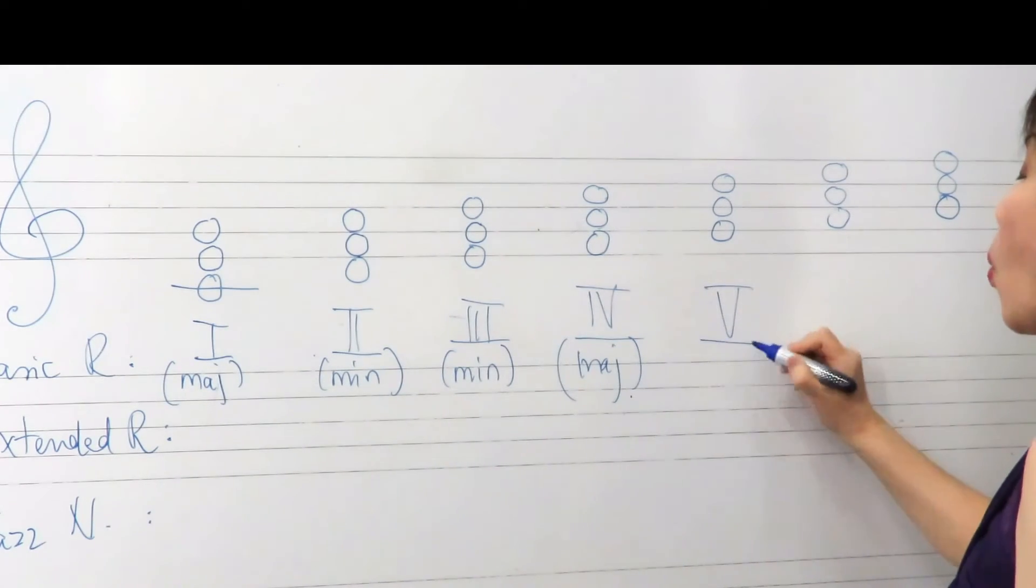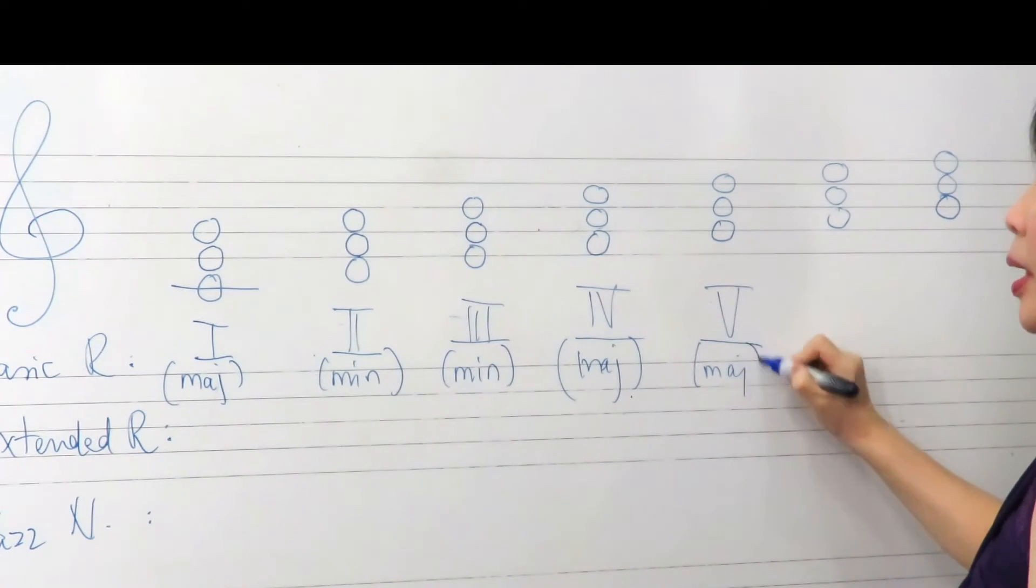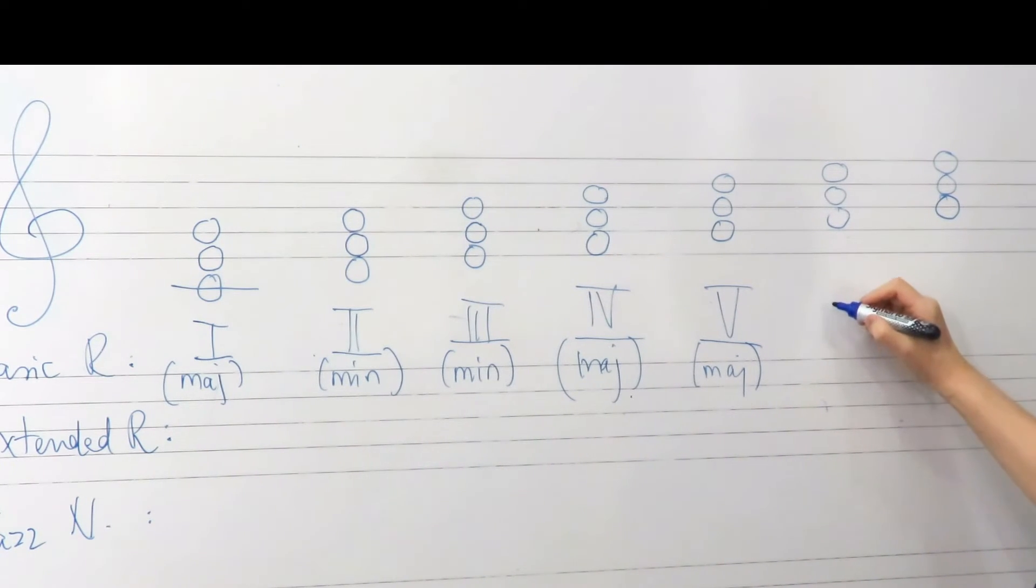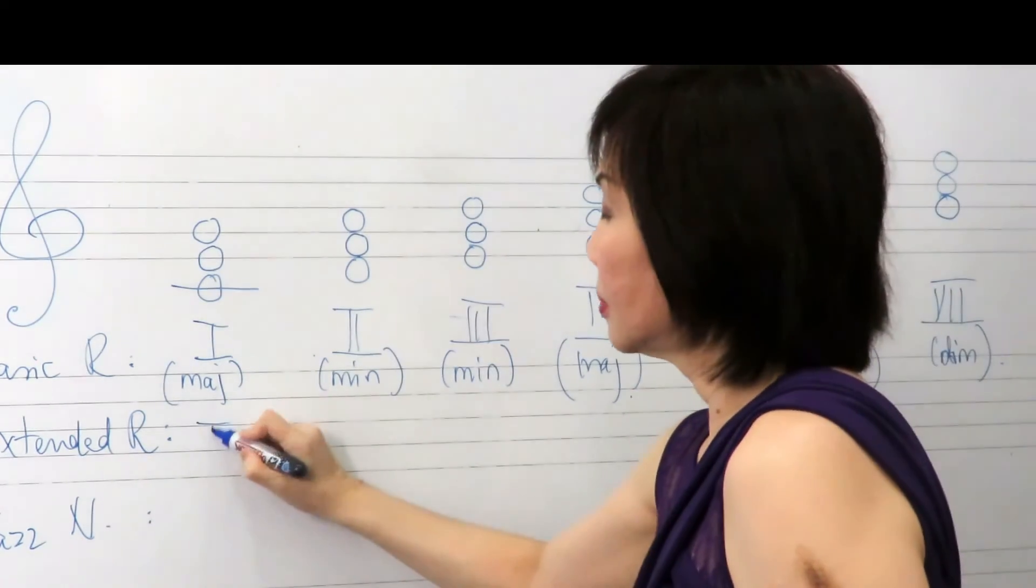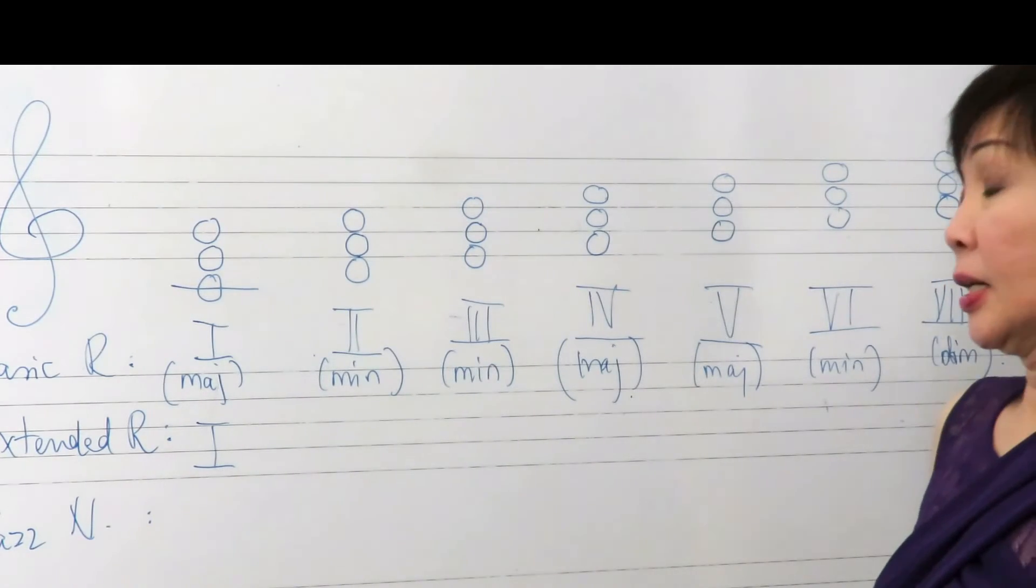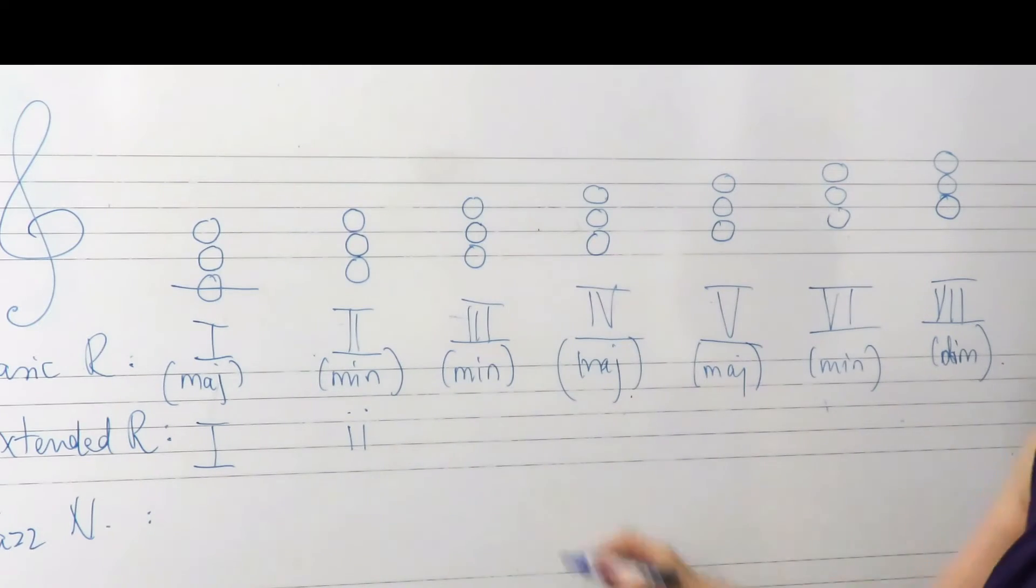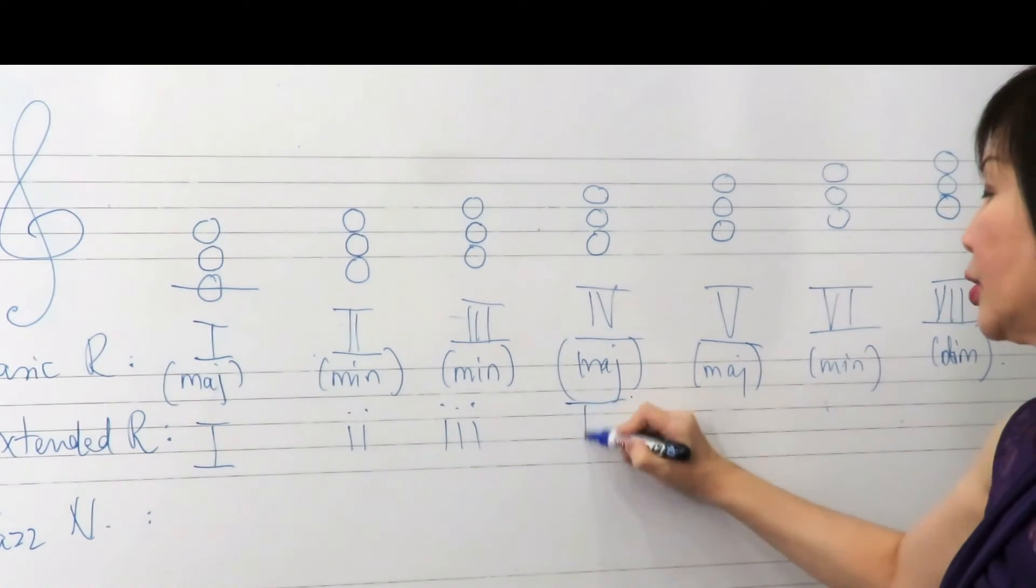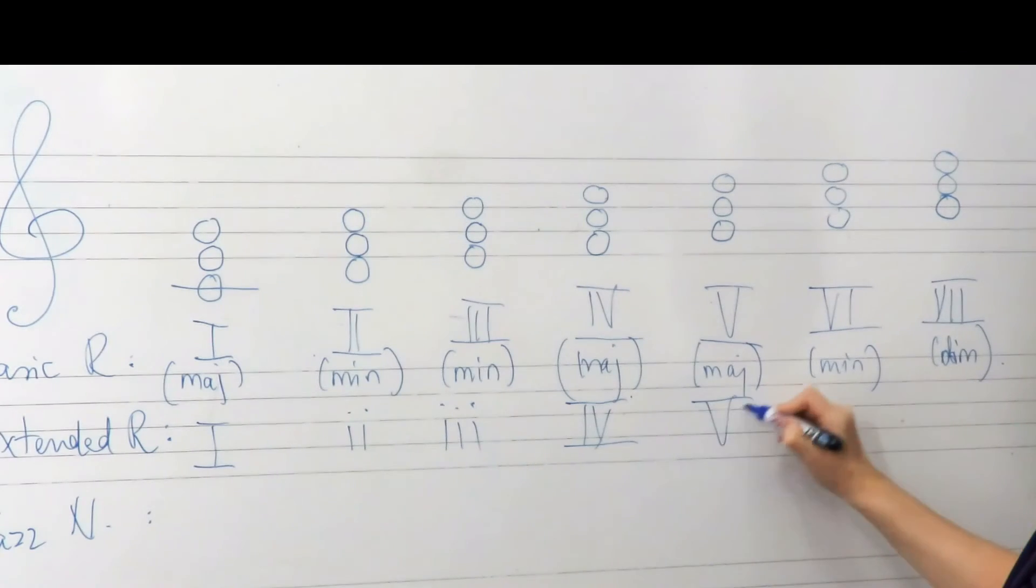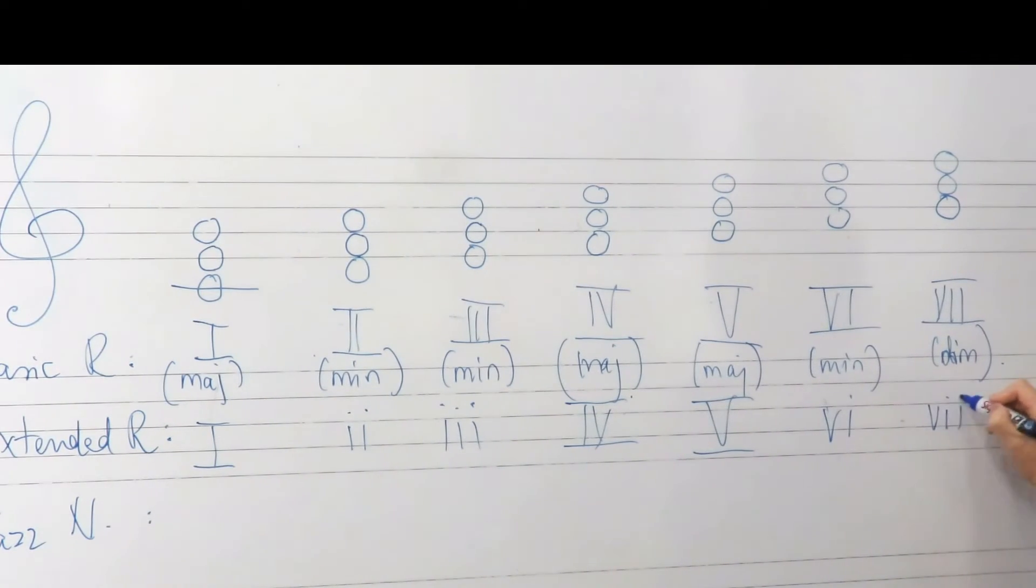However, we can also write them using extended Roman as well as jazz chord notation. So, capital Roman for major triad, small Roman letter for minor triad, and so on. A diminished triad is indicated this way.